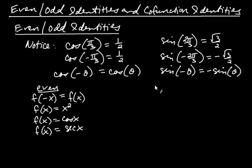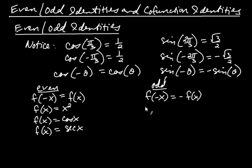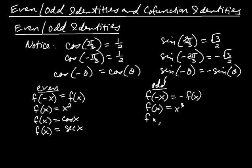We also have odd functions, where plugging in negative x gives you the negative of f of x. A classic example is x cubed — plugging in negative x gives you negative x cubed, the negative of f of x. Sine is an example of an odd function, and so is its reciprocal, cosecant.